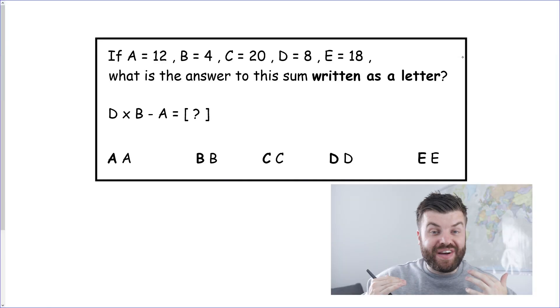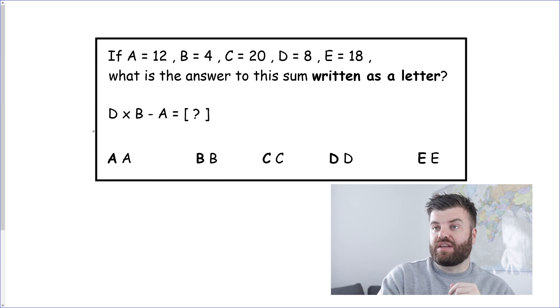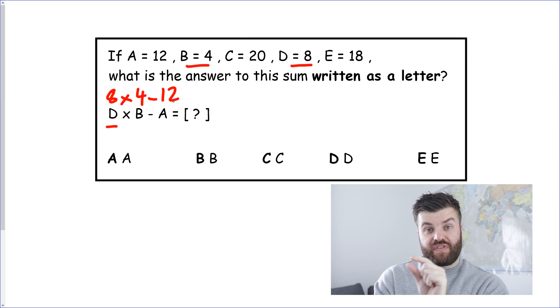Okay so now we know how simple this is we really can whiz through these examples and the technique is simple. Substitute the letter for the number in the code above. Let's take a look. We're going to go straight into D. D at the top here is 8. So we have 8 multiplied by B which is 4. So we write down 8 times 4 and now we have another step. We're going to subtract A and here it is 12.